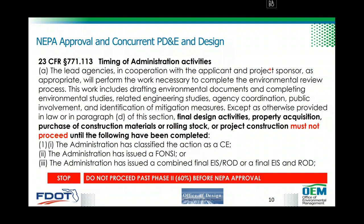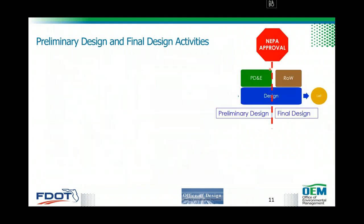Title 23 CFR Section 771.113 states that lead agencies will perform work necessary to complete the environmental review process — drafting environmental documents, completing environmental studies, related engineering studies, agency coordination, public involvement, and identification of mitigation measures. Final design activities, property acquisition, purchase of construction material, rolling stock, or project construction must not proceed until the action has been classified as a CE, a FONSI from an EA, or until a combined final EIS or final EIS in the record has been issued. So you can overlap PD&E and design, but you cannot perform final design activities before NEPA is cleared.